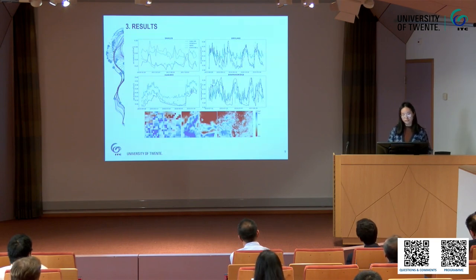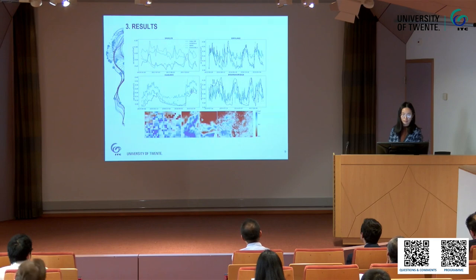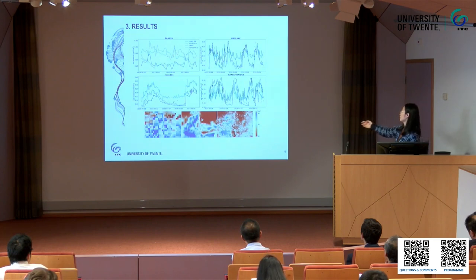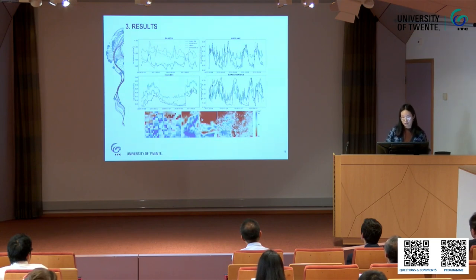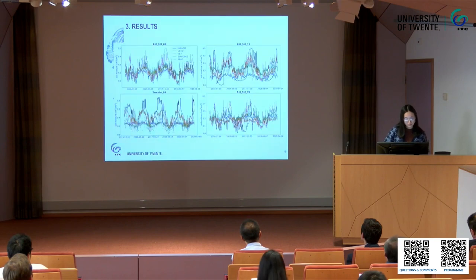Here are some station examples. The black line is the in-situ soil moisture, the blue line is our product, the orange is SMAP, and the green is ESA CCI. The second example is the Dry Lake station in the US. From the time series our product is more consistent, and from the spatial distribution it shows more spatial detail.